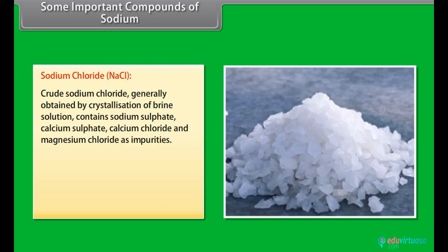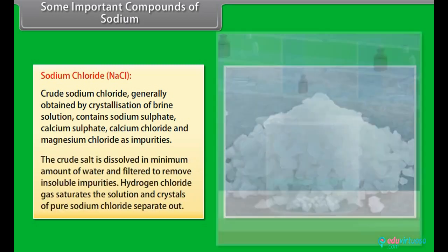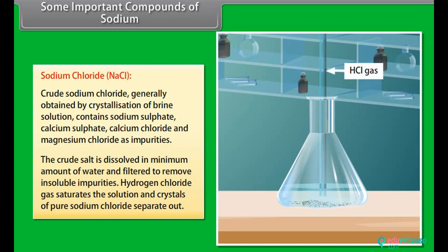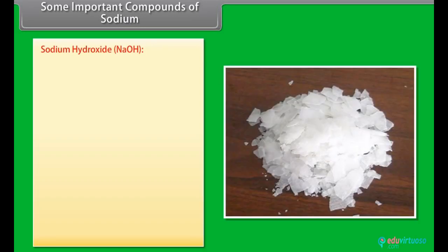Sodium chloride: crude sodium chloride generally obtained by crystallization of brine solution contains sodium sulfate, calcium sulfate, calcium chloride, and magnesium chloride as impurities. The crude salt is dissolved in minimum amount of water and filtered to remove insoluble impurities. Hydrogen chloride gas saturates the solution and crystals of pure sodium chloride separate out.